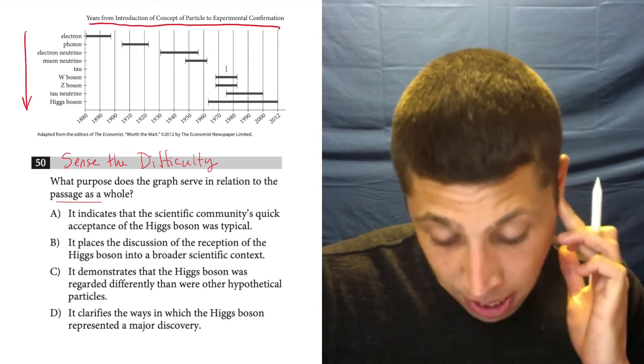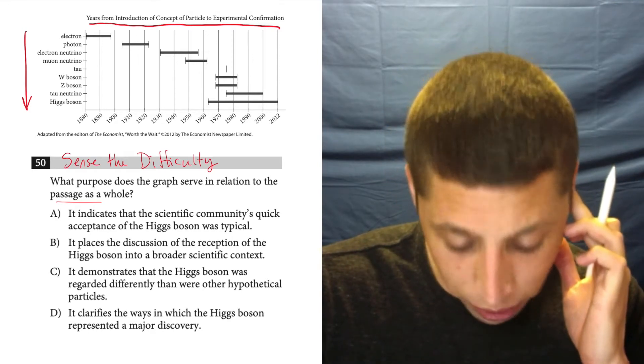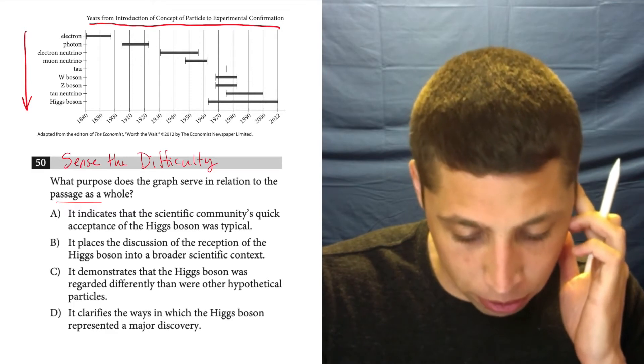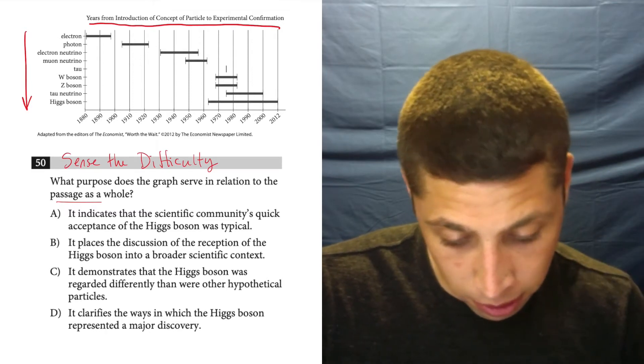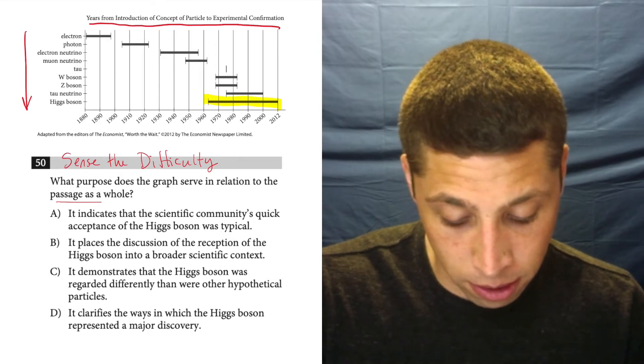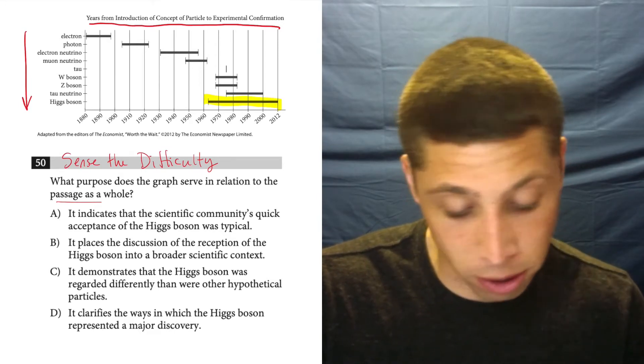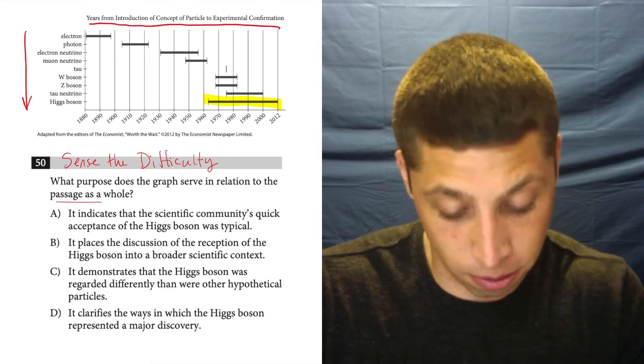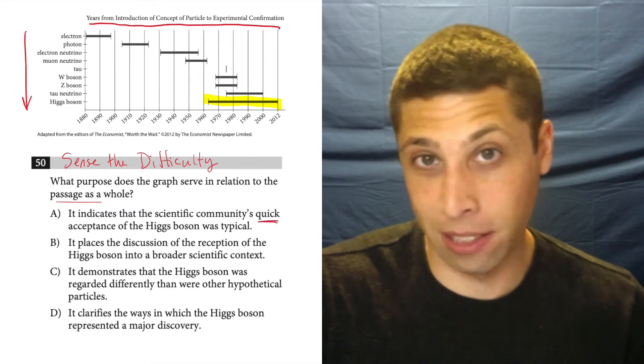So what does the graph do? It indicates that the scientific community's quick acceptance of the Higgs boson was typical. Well, look at the Higgs boson. Look at how long that line is. I don't know. It doesn't seem quick to me. It looks longer than all the other lines. So that doesn't seem right.